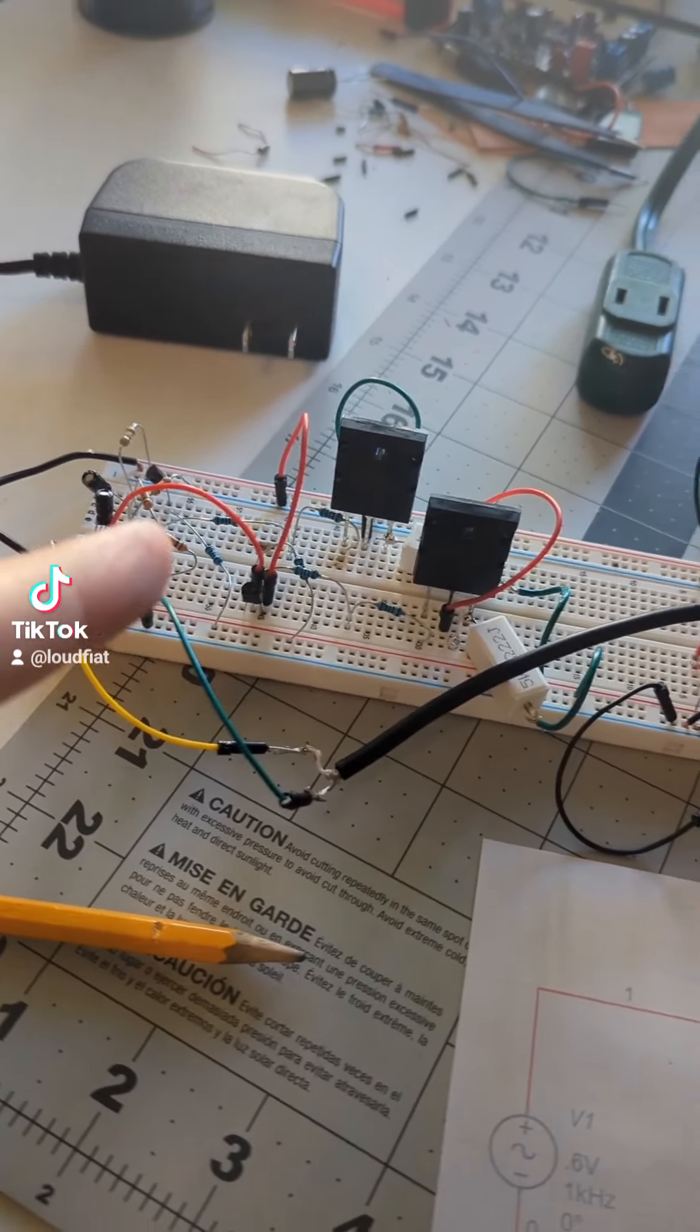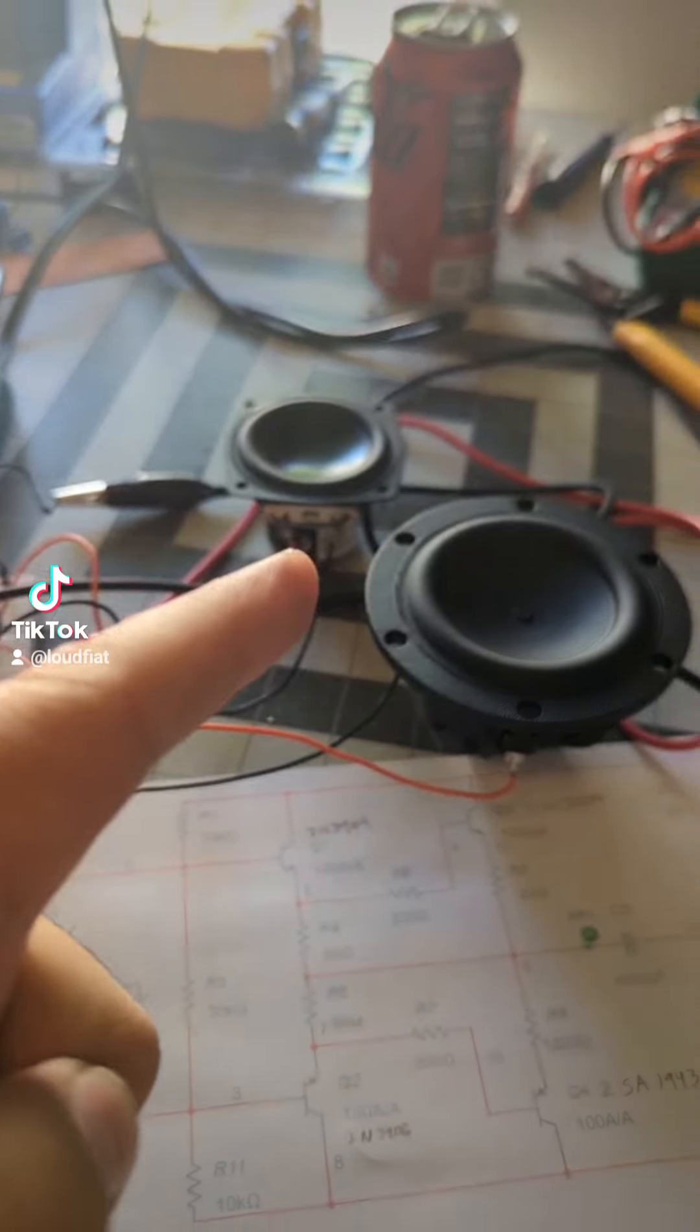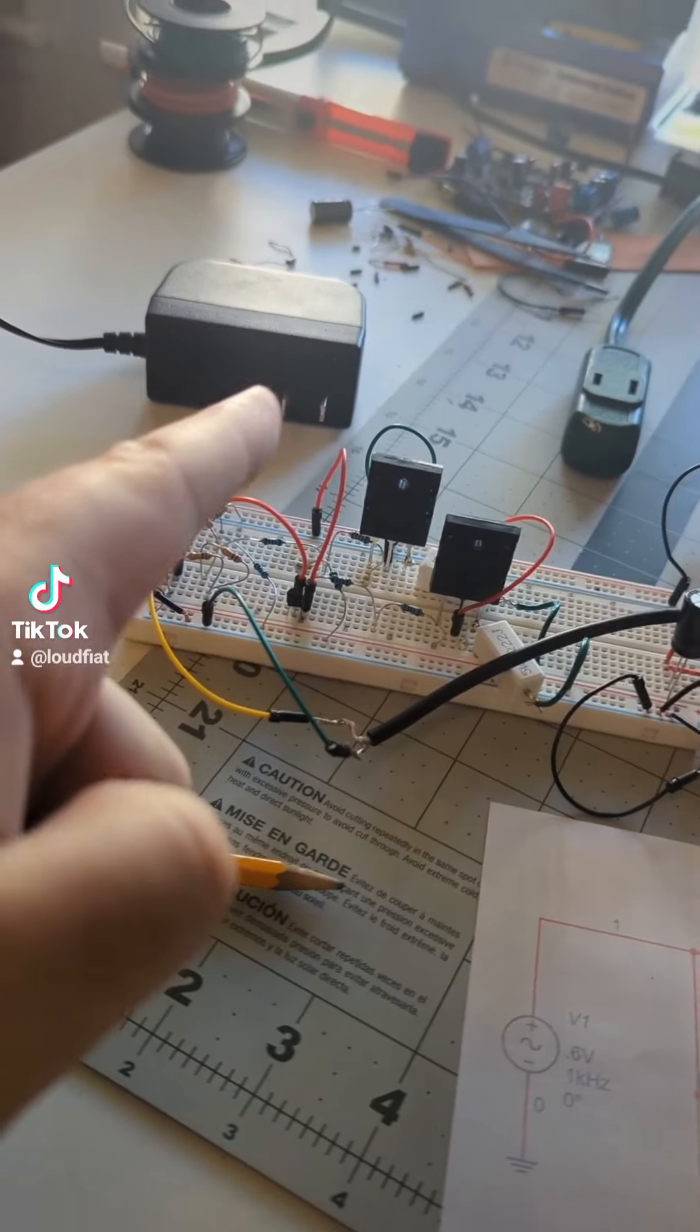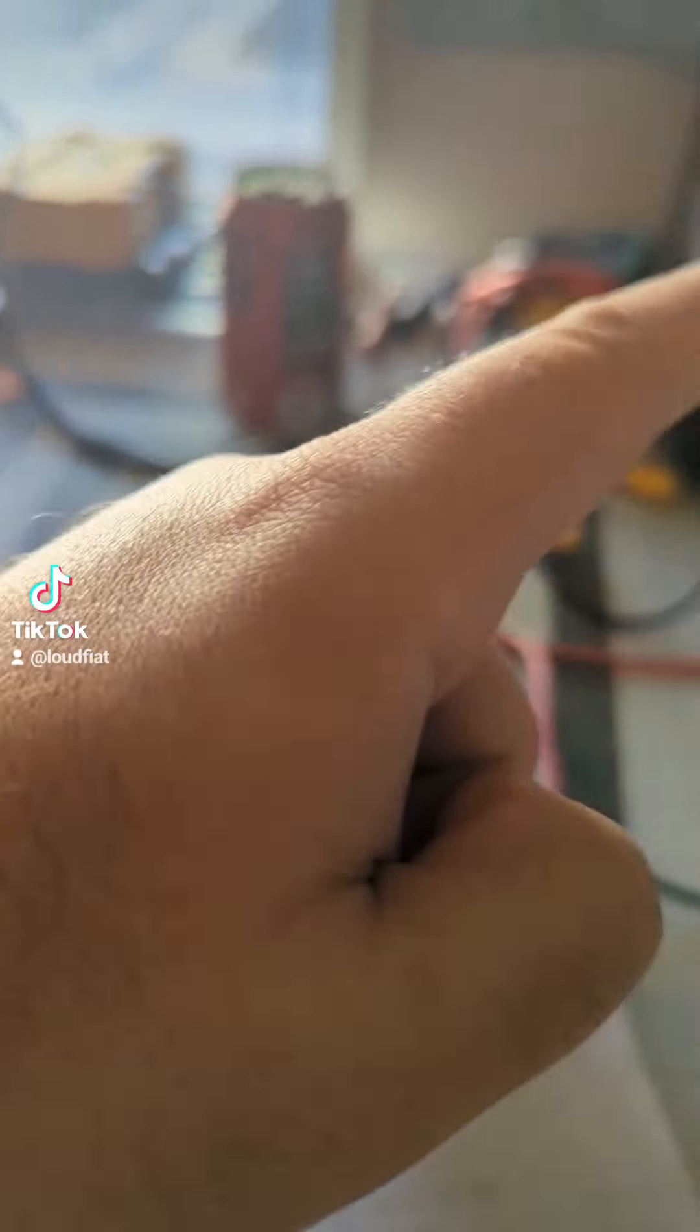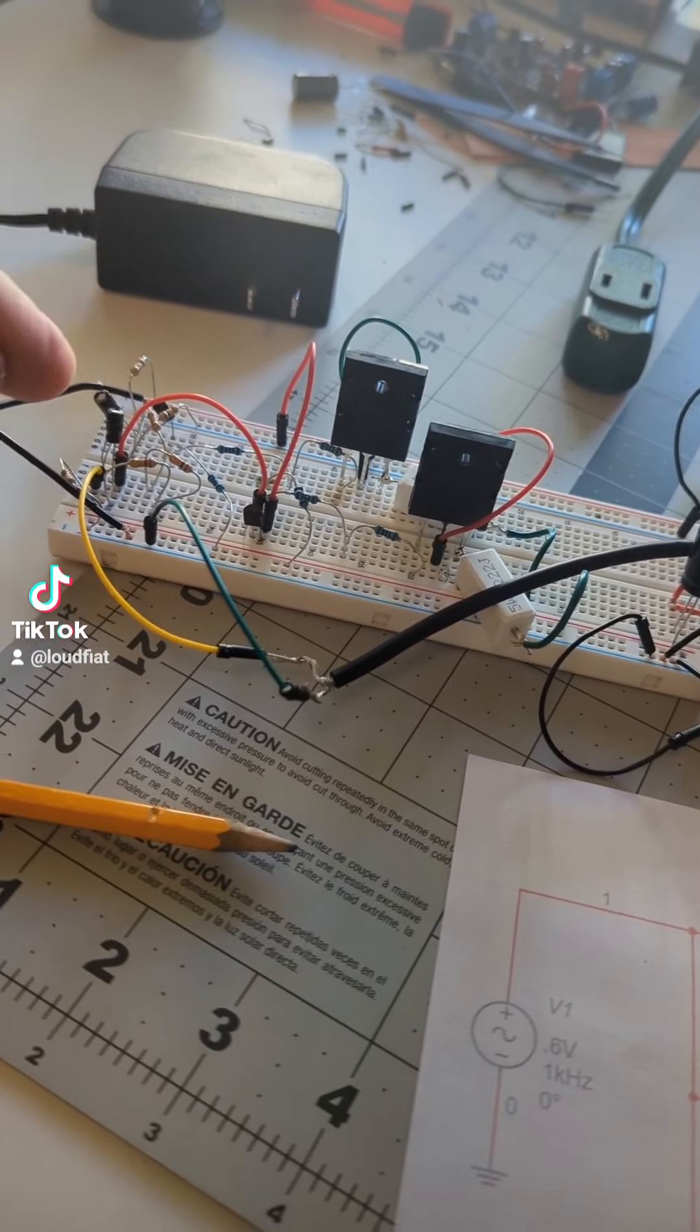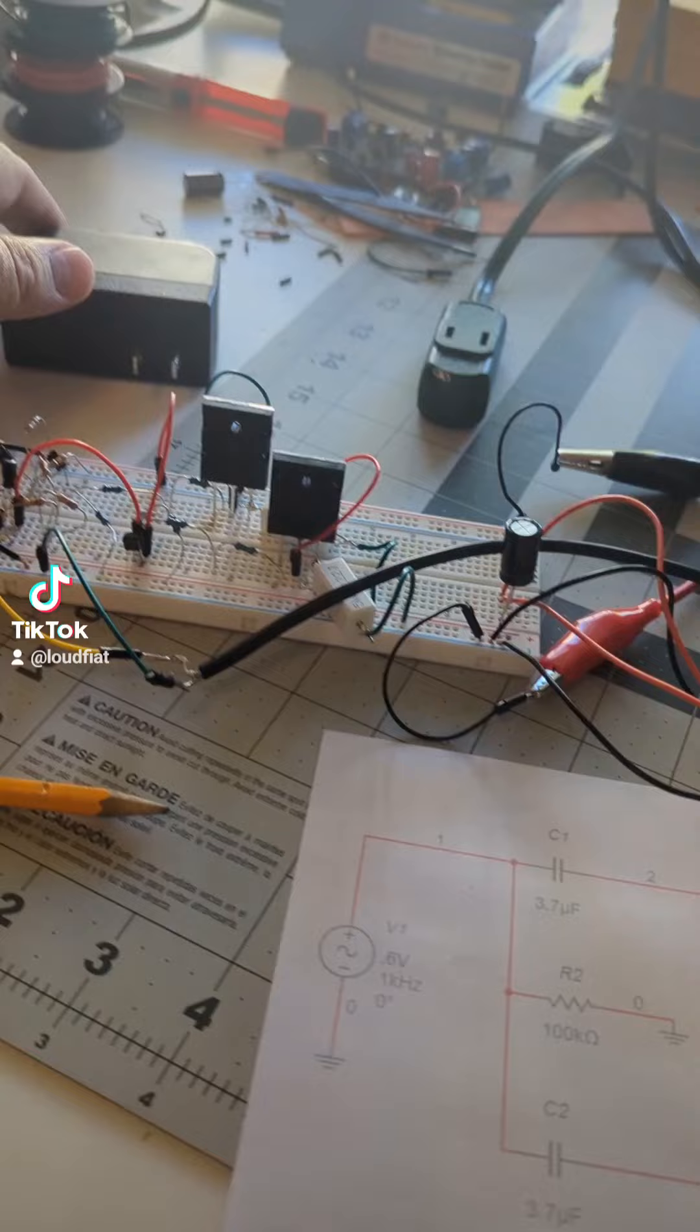So I just finished building my second class AB amplifier. This one is a little bit more advanced. We have a negative 12 volt rail and a positive 12 volt rail. I'm using two different rails to provide a full 24 volts of swing.